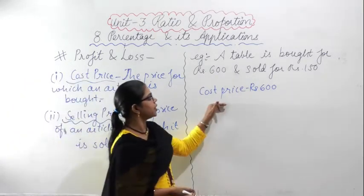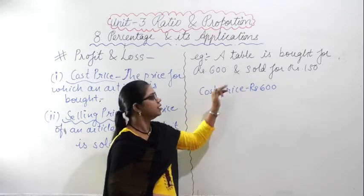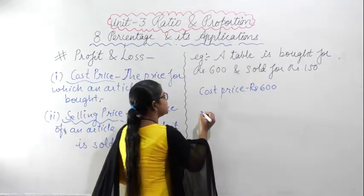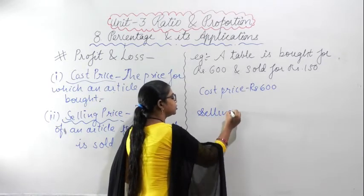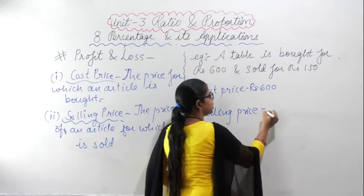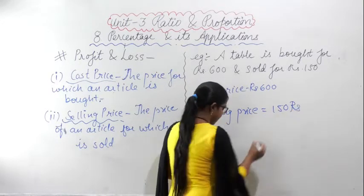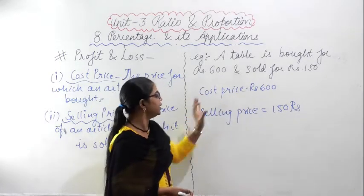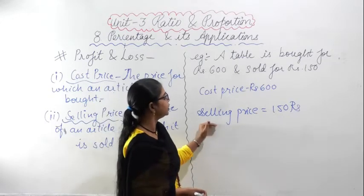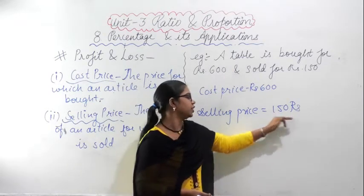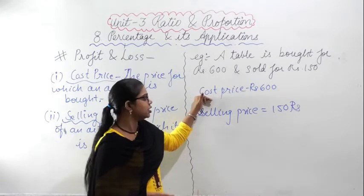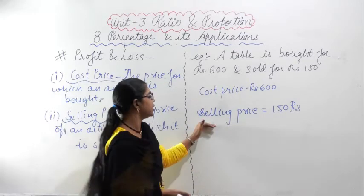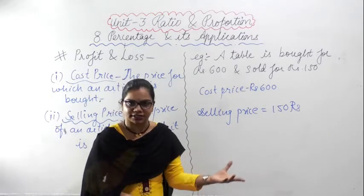The table is bought for Rs. 600 and after that sold for Rs. 150 — so the selling price here is Rs. 150. He purchased at cost price Rs. 600 but sold that table for Rs. 150. Cost price is the amount at which you purchase, and selling price is the amount at which you sell the item.